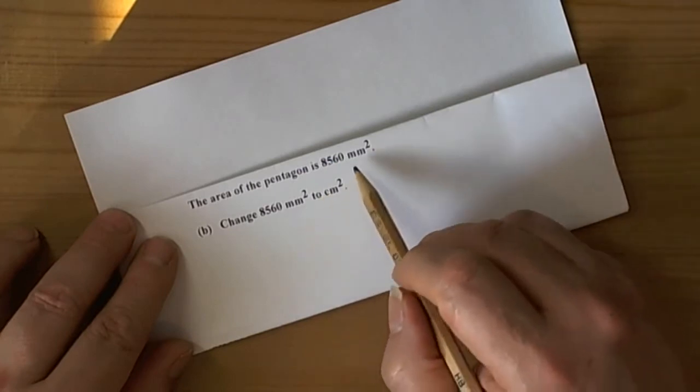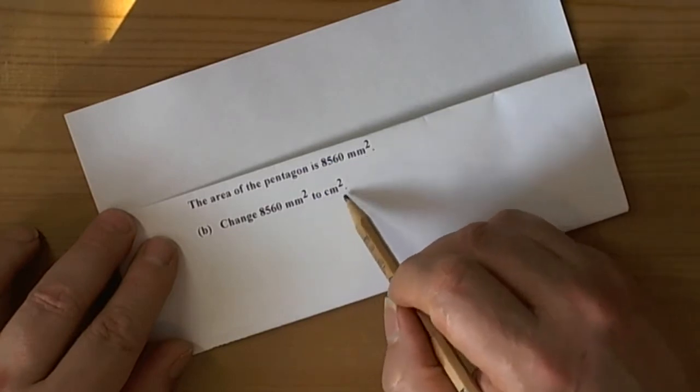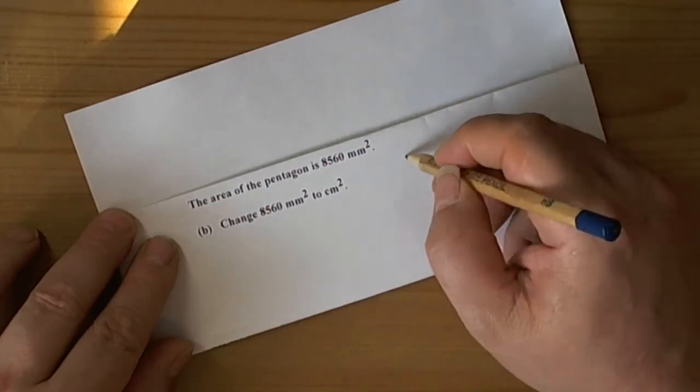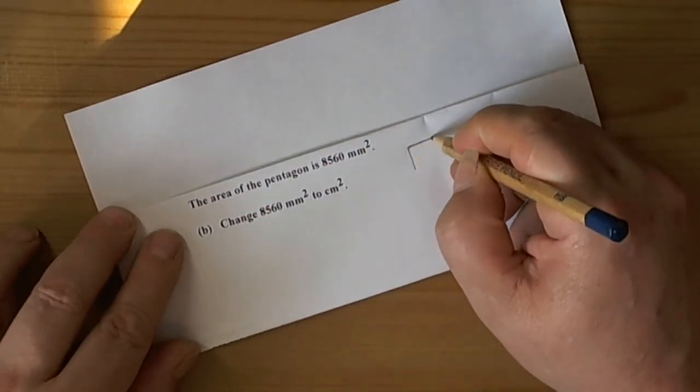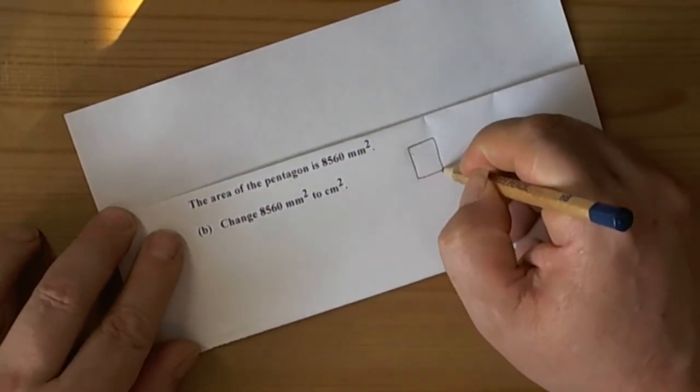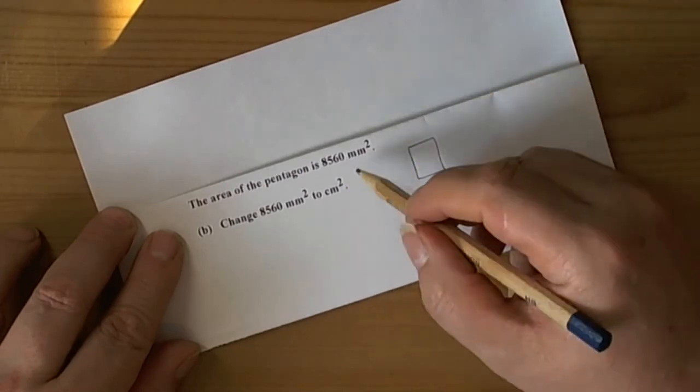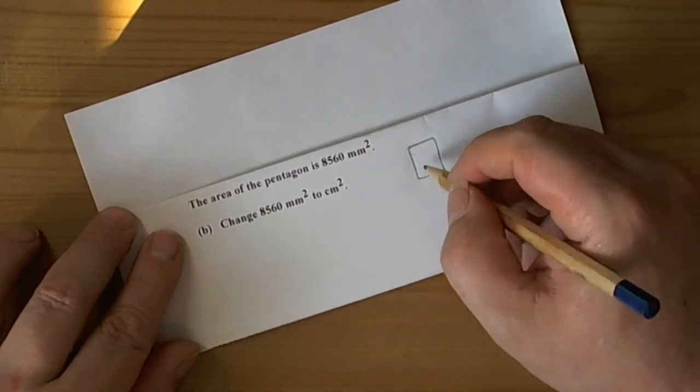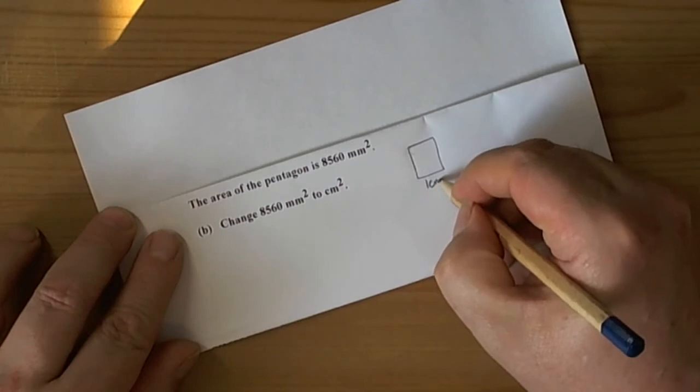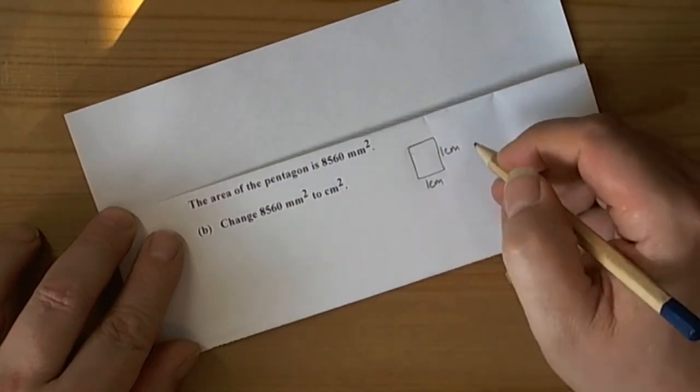So we've got to change in this question square millimeters into square centimeters. Well I always recommend if you've got to change units then consider the two units as squares. So if we have a one centimeter square it will be one centimeter by one centimeter.